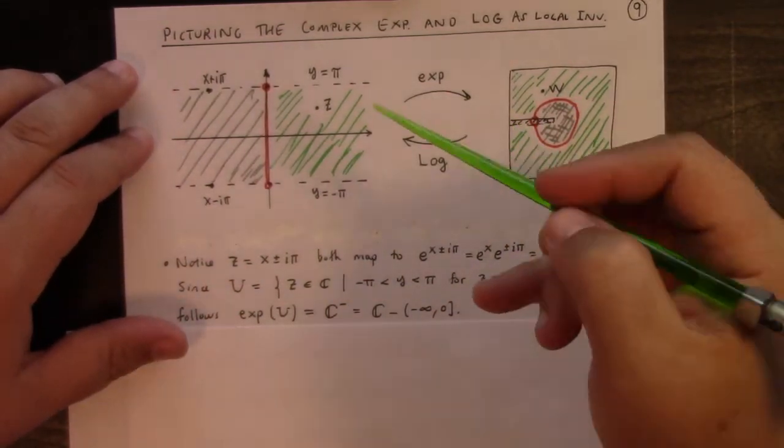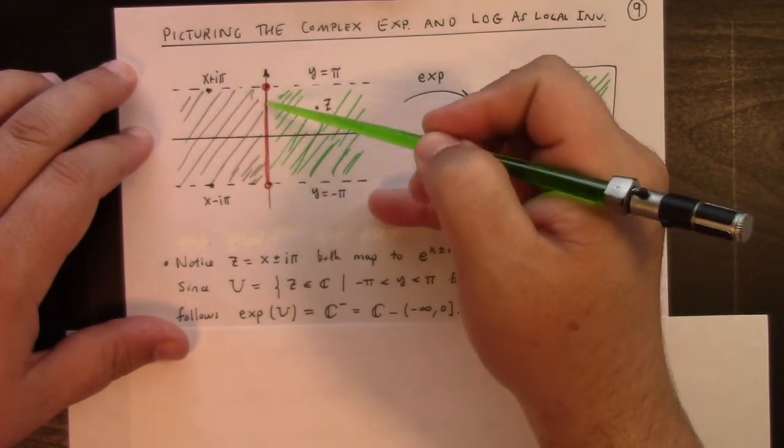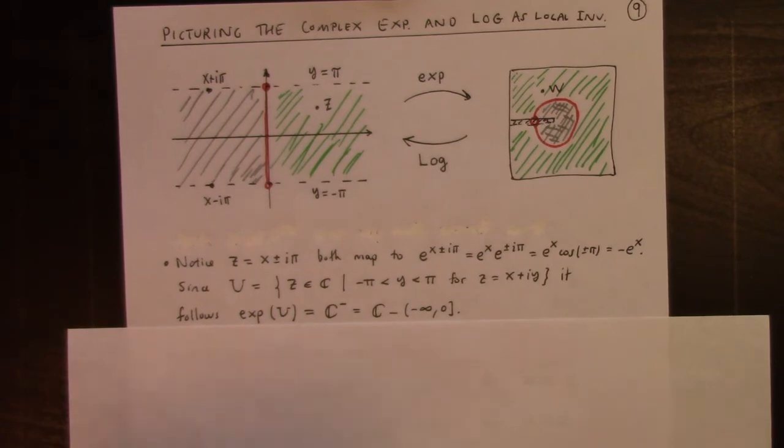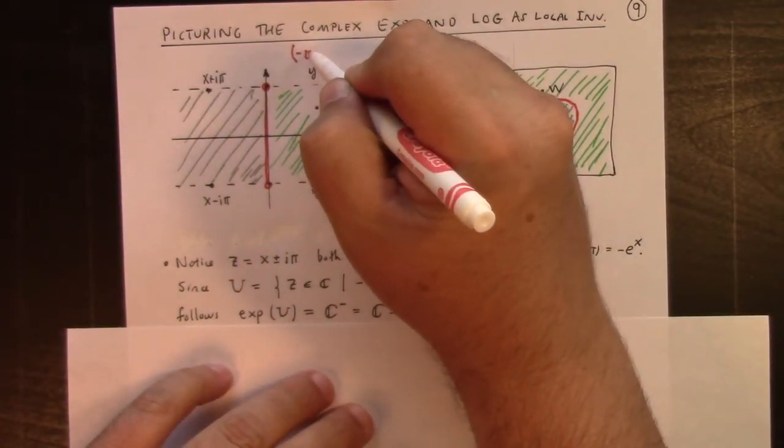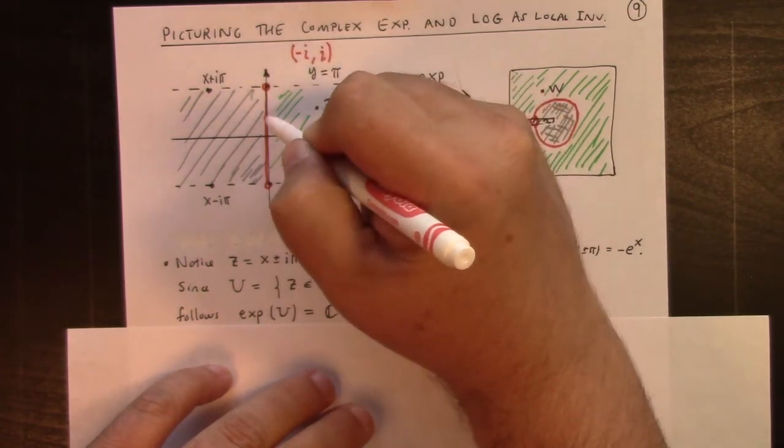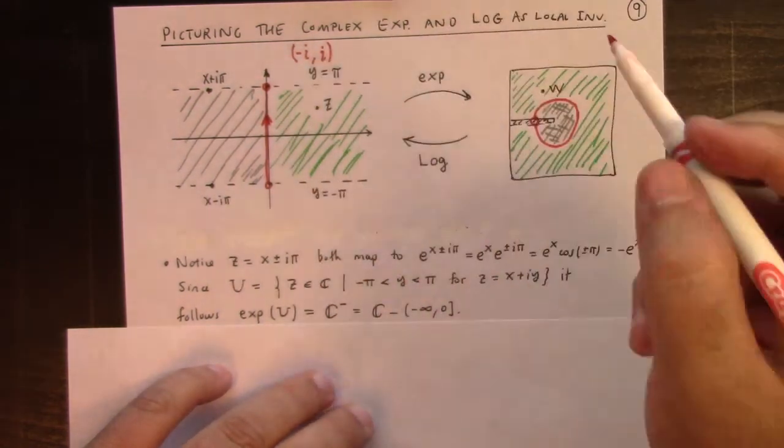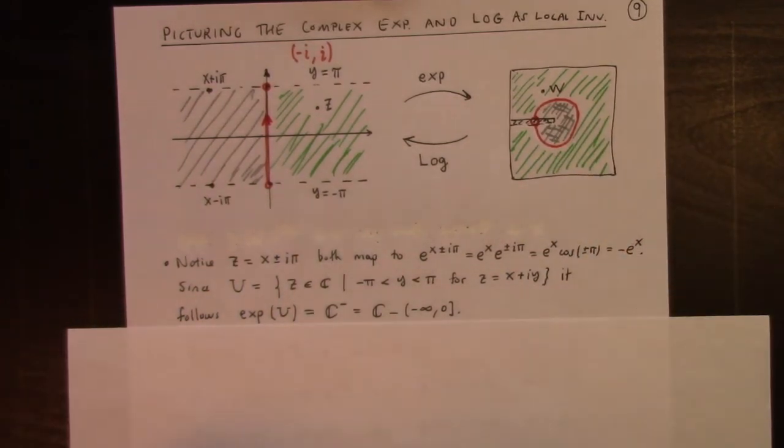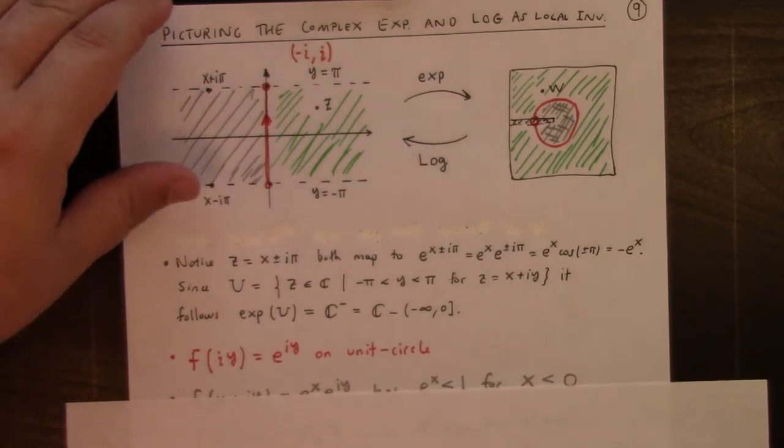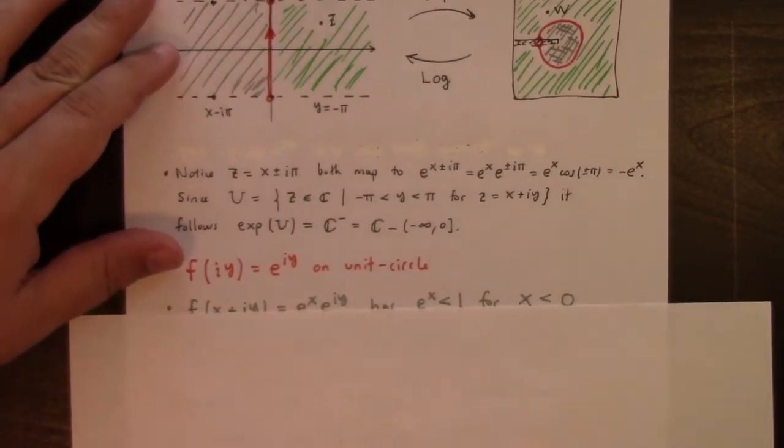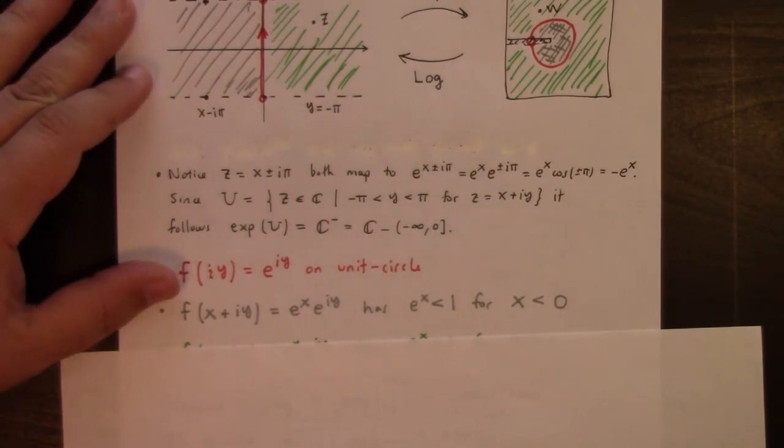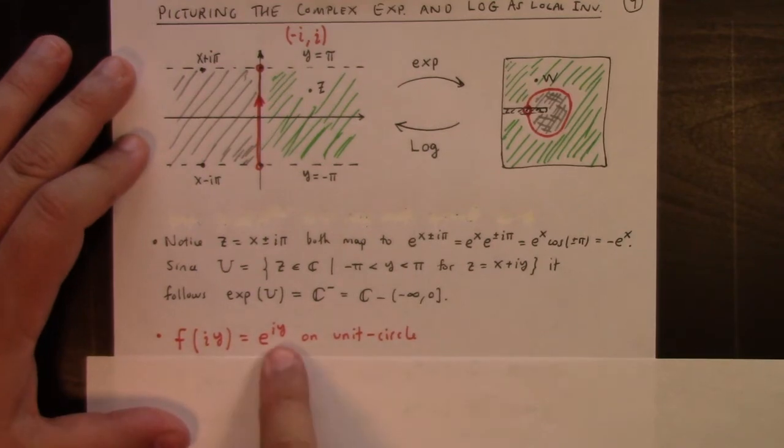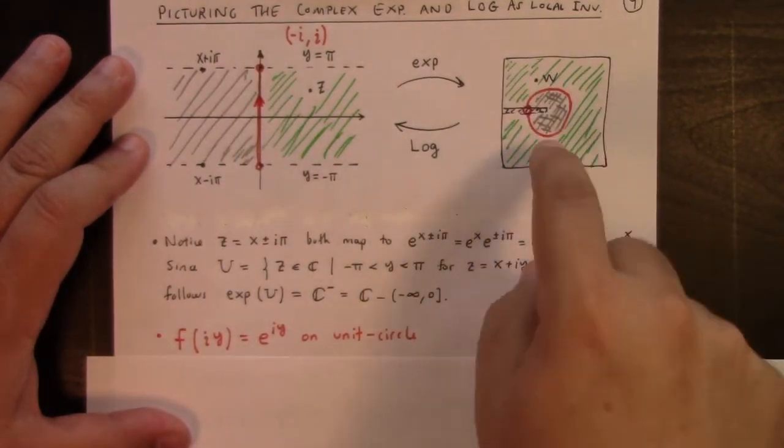I've done some color coding here. This red open line segment from minus i to i, if we want to give it that orientation, maps to the unit circle, actually, under the exponential map. If you look at f of i y, well, that's e to the i y, and that's a point on the unit circle. So the red vertical line segment maps to the unit circle.